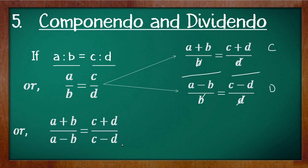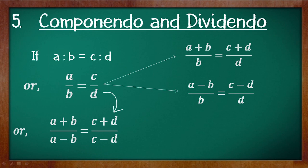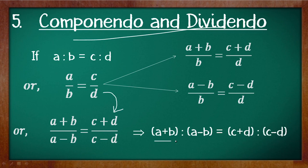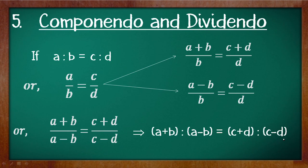This property is known as componendo and dividendo. Applying both, a by b equal to c by d gives us a plus b divided by a minus b is equal to c plus d divided by c minus d — that is, numerator plus denominator divided by numerator minus denominator, done on both sides. In ratio form: a plus b is to a minus b is equal to c plus d is to c minus d.